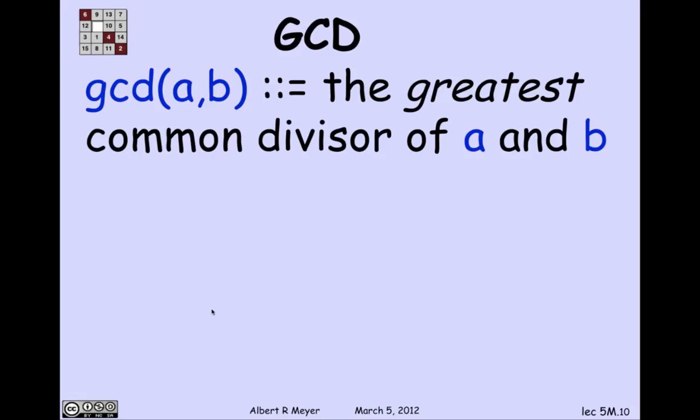And so as we did in an exercise, or I think in the text, that implies that there will be a greatest one among all the common divisors, assuming there are any. But one is always a common divisor, so there are guaranteed to be some.